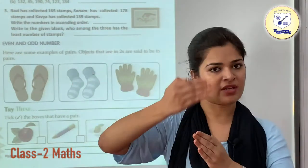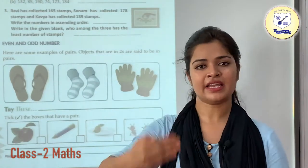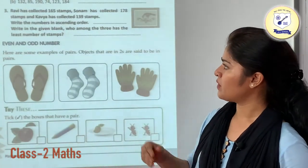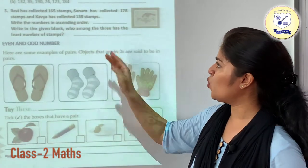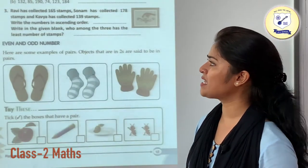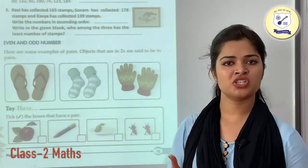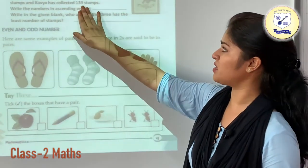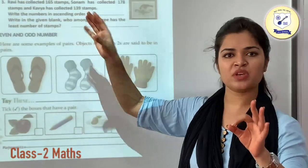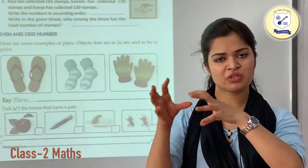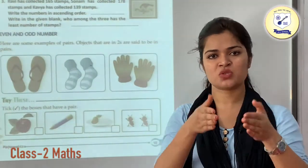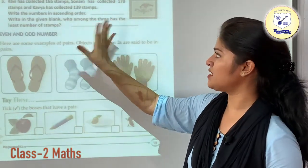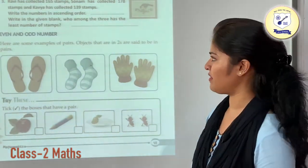After that we write 165 and then 178. Now, who among the three has the least number of stems? The least means the smallest number, which is 139 — that is your least number of stems.